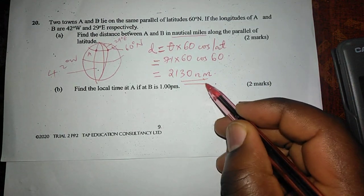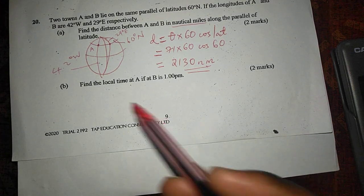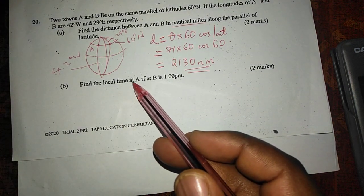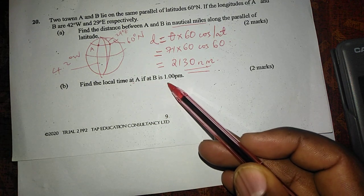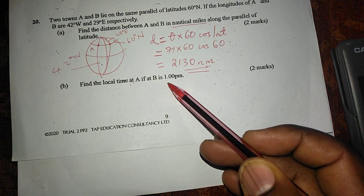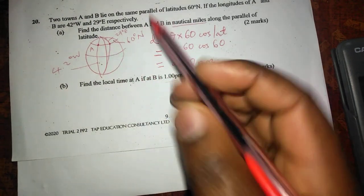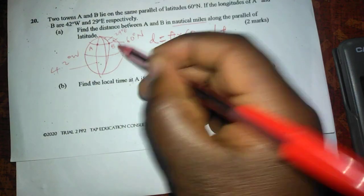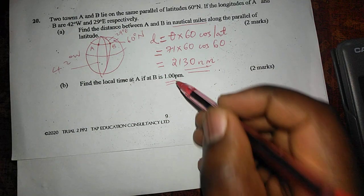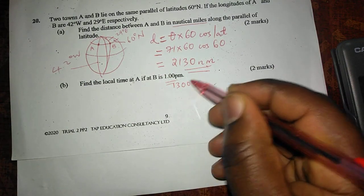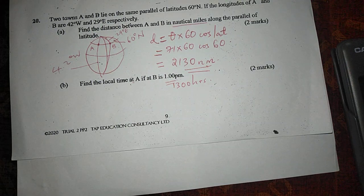And finally, we are told to find the local time at A if at B is 1 p.m. So if at B is 1 p.m., then the time at A, remember this is B which is in the east, and we are at 1 p.m. or 13:00 hours. So if at B it is 13:00 hours.